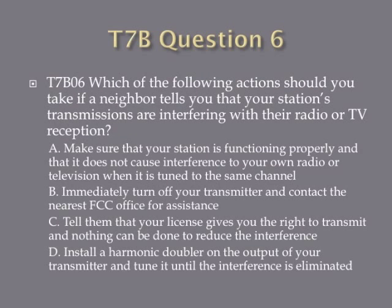Question 6. Which of the following actions should you take if a neighbor tells you that your station's transmissions are interfering with their radio or TV reception? A. Make sure that your station is functioning properly and that it does not cause interference to your own radio or television when turned to the same channel. B. Immediately turn off your transmitter and contact the nearest FCC office for assistance. C. Tell them that your license gives you the right to transmit and nothing can be done to reduce the interference. Or D. Install a harmonic doubler on the output of your transmitter and tune it until the interference is eliminated.